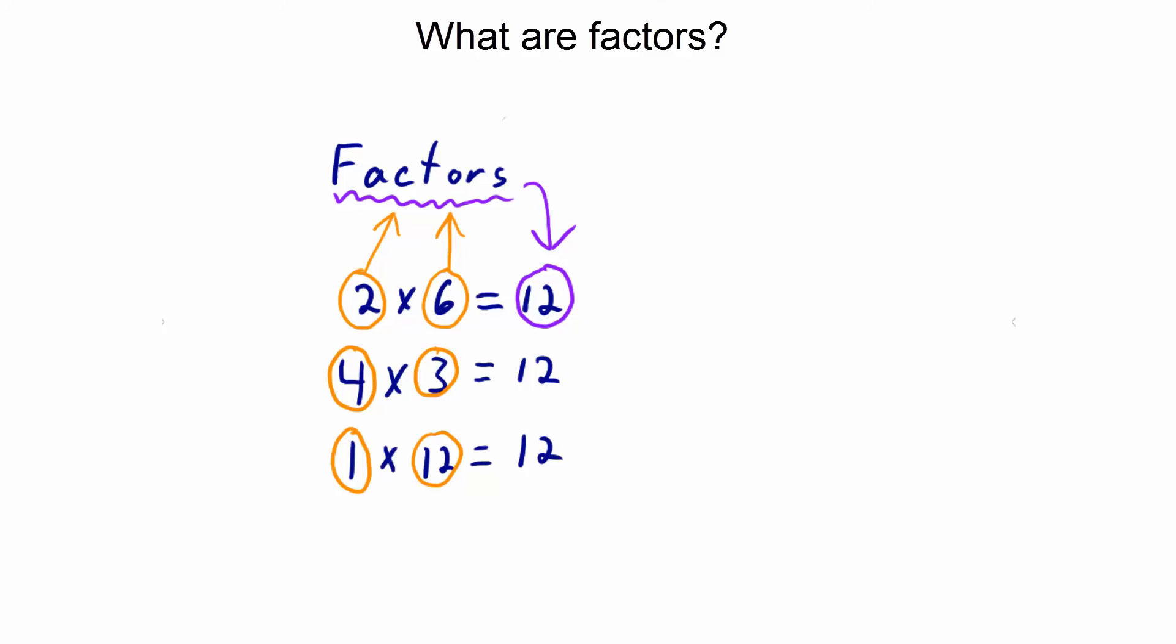As you can see, there can be many factors for a number. For instance, take number 12. 2 and 6 are factors. 4 and 3 are factors of 12. 1 and 12 are factors of 12.